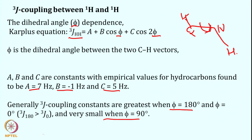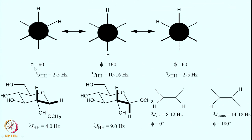If the phi torsion angle between two planes of an ethane-like system is around 60°, the three-bond proton-proton coupling is 2–5 Hz. If it is 180°, the coupling is 10–16 Hz. If it is 60° (gauche), it is again 2–5 Hz. From the experimentally measured J value, one can calculate the phi torsion angle.